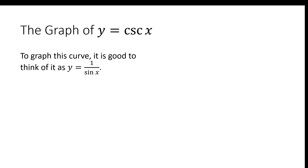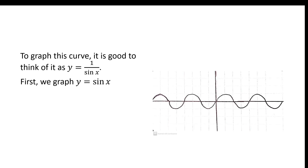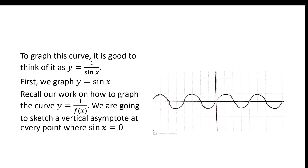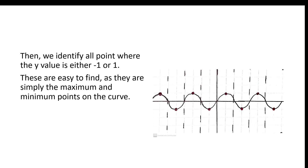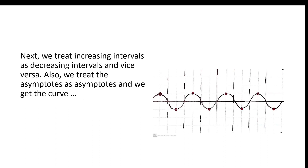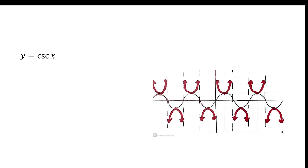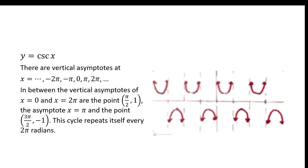Now, how about cosecant x? To graph that curve, it's good to think of it as y equals 1 over sin x. First, we graph y equals sin x, then we recall our work on how to graph 1 over f(x). We sketch a vertical asymptote at every x-intercept, where sin x equals 0. Then we identify all the points where the y value is either negative 1 or 1 — those are easy to find because they're the maximum and minimum points on the curve. We treat increasing intervals as decreasing intervals and vice versa, treat the asymptotes like asymptotes, and we get a curve that looks like this. We have vertical asymptotes at the values shown, a few key points in between, and a period of 2 pi radians — that cycle repeats every 2 pi radians.